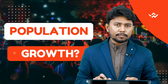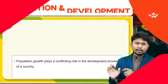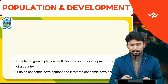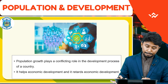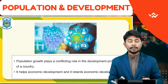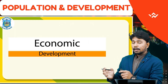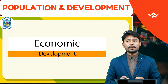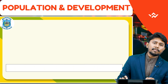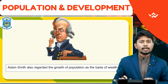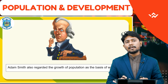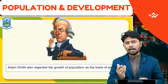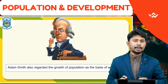Population growth plays a very conflicting role in the development process of any country — it both helps and retards economic development. Economic development has indicators like HDI, which includes health, education, living standard, and infrastructure. These all come under the umbrella of economic development.